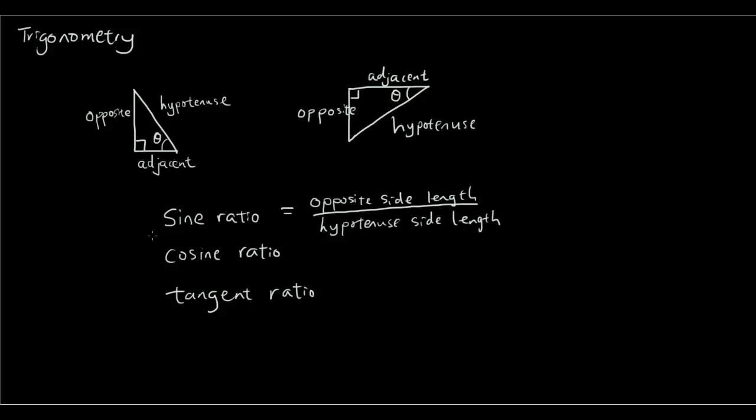The cosine ratio is the adjacent side divided by the hypotenuse. And the tangent ratio is the opposite divided by the adjacent.